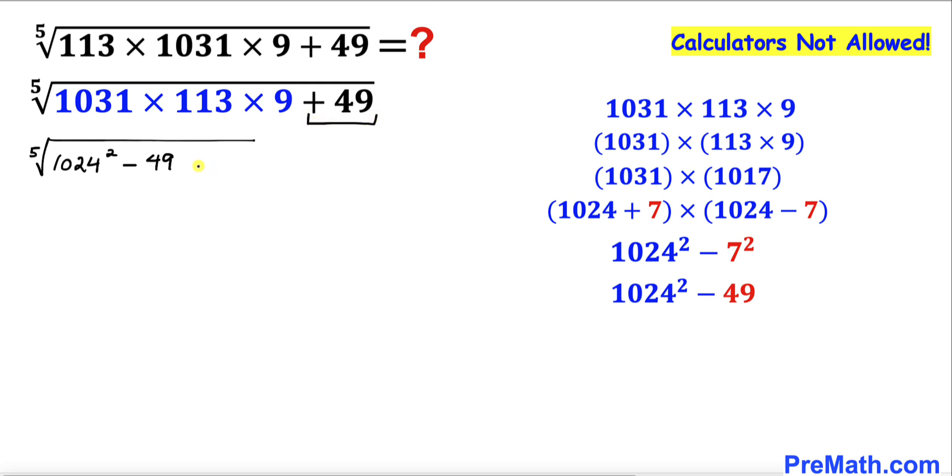Then I'm going to write down this part as well which is positive 49. Now we can see this negative 49 and positive 49 cancel out. Therefore we are left with just the fifth root of 1024 squared.